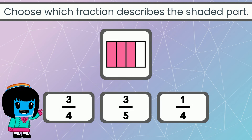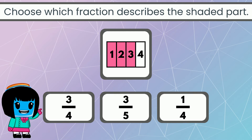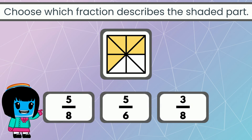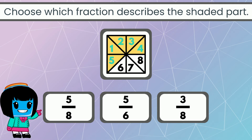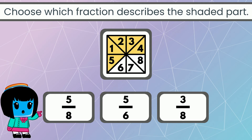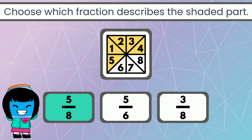For this rectangle, three out of four parts are shaded, so we have three fourths. Lastly, this square has a total of eight parts and five of them are shaded. This means the fraction is five eighths.